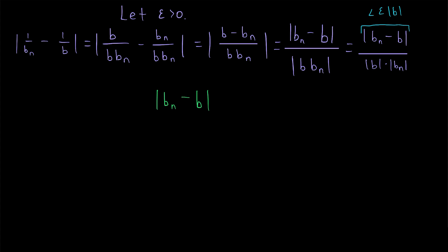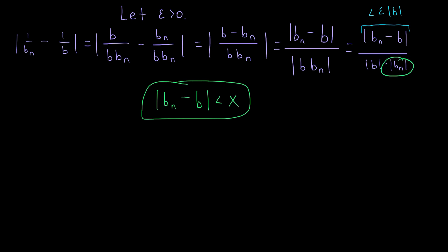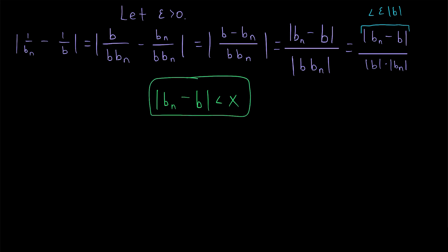The idea is that since bn converges to b and b is not equal to 0, eventually the absolute value of bn must be pretty close to b and not so close to 0. Then we could put a definite lower bound on how small it is and cancel out whatever that happens to be with our absolute value of bn minus b, because we can make that as small as we need. We're hoping to say: eventually bn is sufficiently close to the limit b, so the distance between them is less than some value x, and this inequality will hopefully imply something useful about the absolute value of bn.